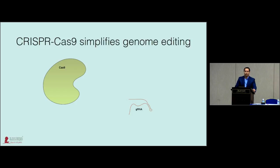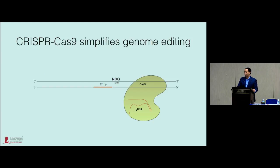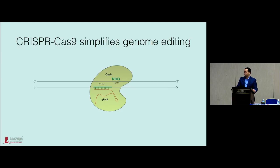There are a number of different classes of engineered nucleases, including mega-nucleases, zinc finger nucleases, TALENs, and more recently the CRISPR-Cas9 system. CRISPR-Cas9 really simplifies genome editing. It's a two-component complex where Cas9 protein is complexed with a short guide RNA sequence. For S. pyogenes Cas9, the Cas9-RNA complex can recognize a 20 base pair target site adjacent to an NGG protospacer adjacent motif, and upon recognizing its target, Cas9 introduces a targeted double-stranded break.